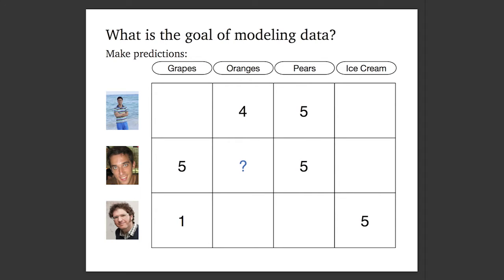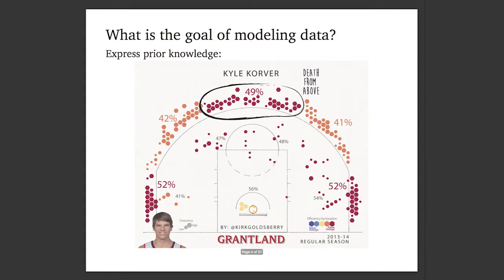Another goal that we have is making predictions. This is a recommendation problem. On the left we have a bunch of my co-authors, and on the right we have a bunch of food that they've rated. One is the lowest, five is the highest. One question we might ask is, how well does Laurent there in the middle like oranges — whether we should give them oranges or not.